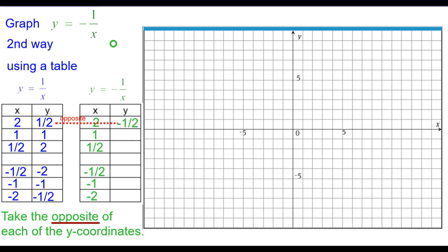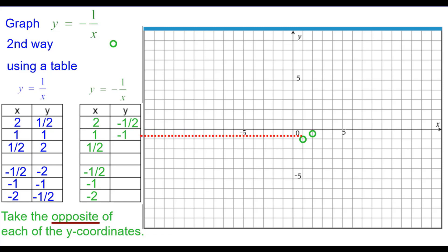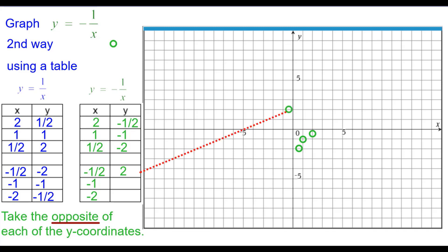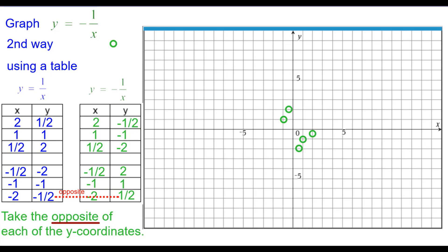So 1 half goes to negative 1 half — plot 2 comma negative 1 half. 1's opposite is negative 1 — plot 1 comma negative 1. And 2's opposite is negative 2 — plot 1 half down to negative 2. The opposite of negative 2 is positive 2, so negative 1 half up 2. Opposite of negative 1 is positive 1 — plot negative 1 comma 1. And the opposite of negative 1 half is positive 1 half — so negative 2 up positive 1 half.